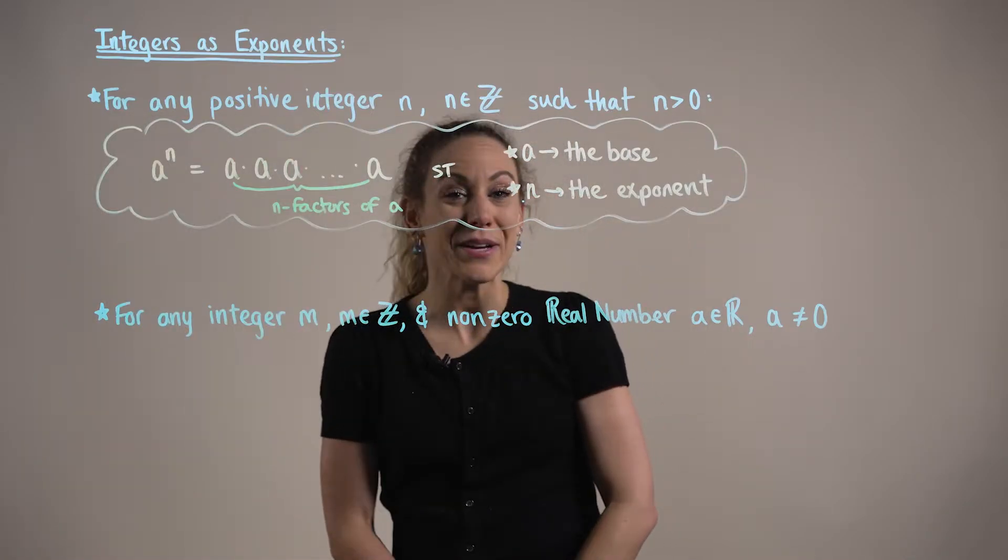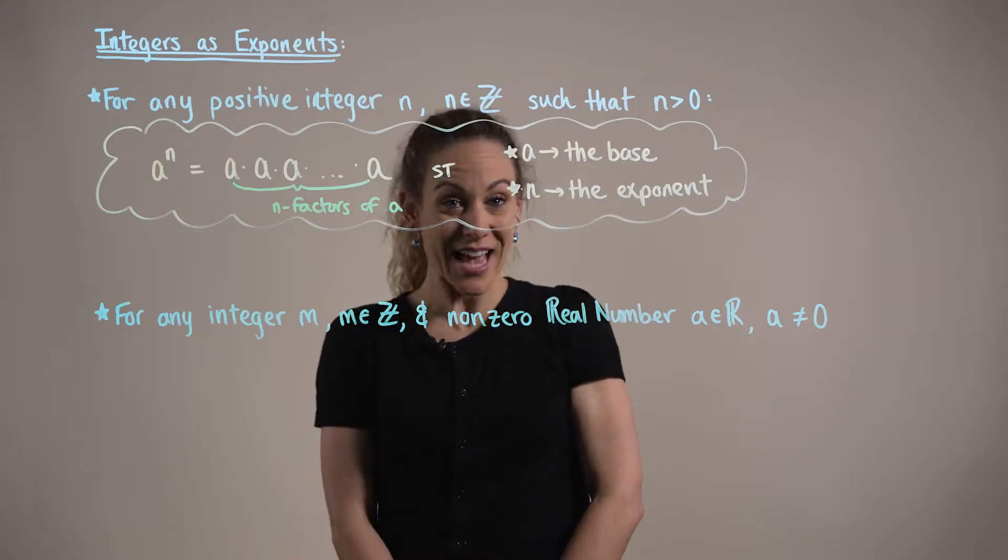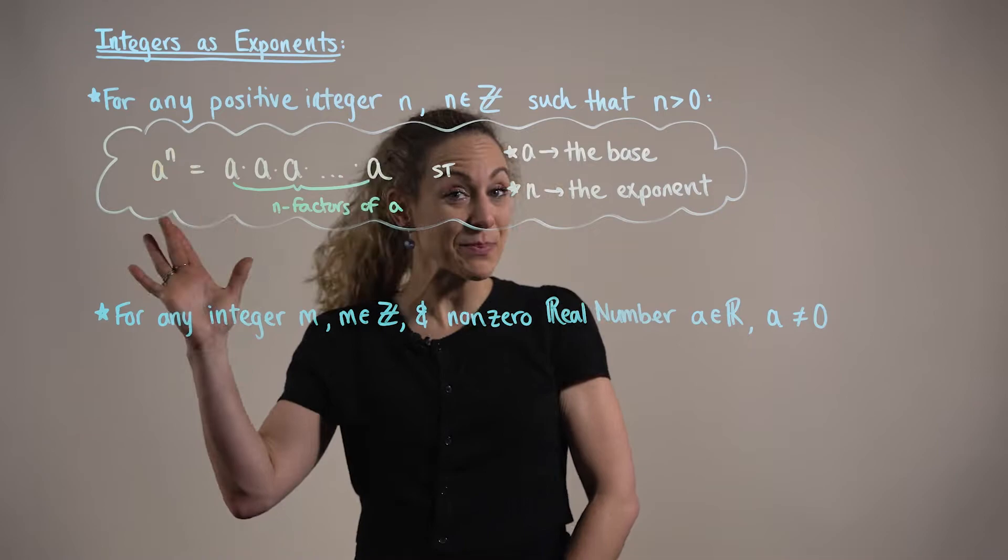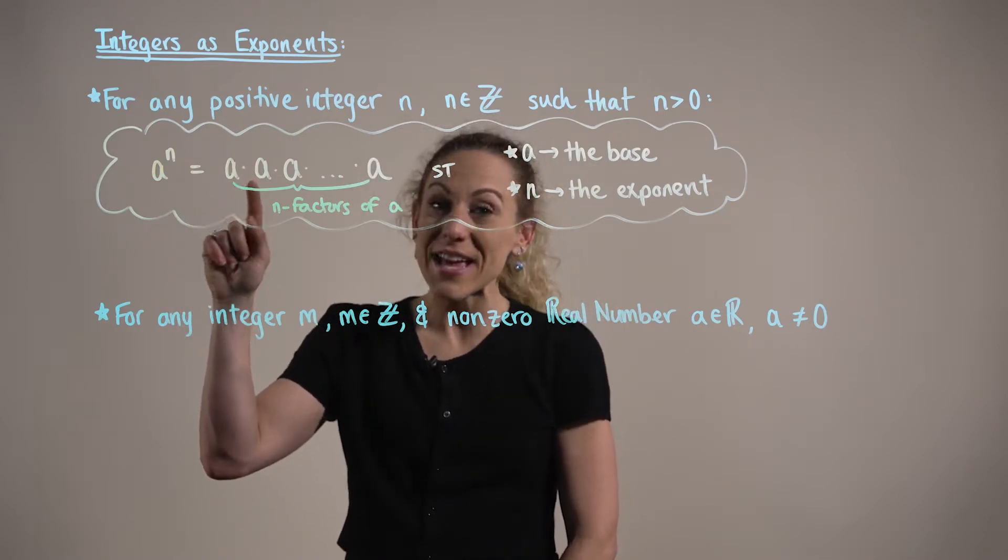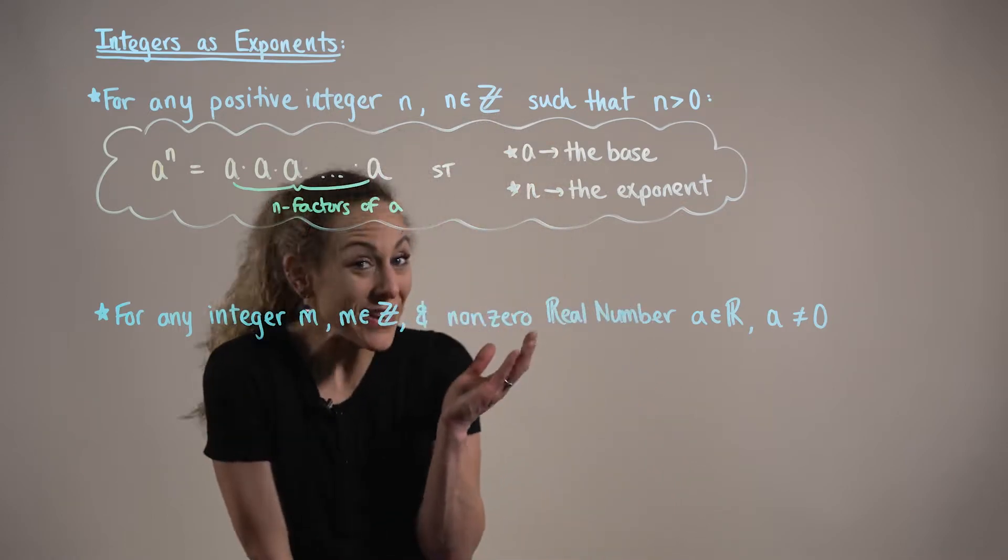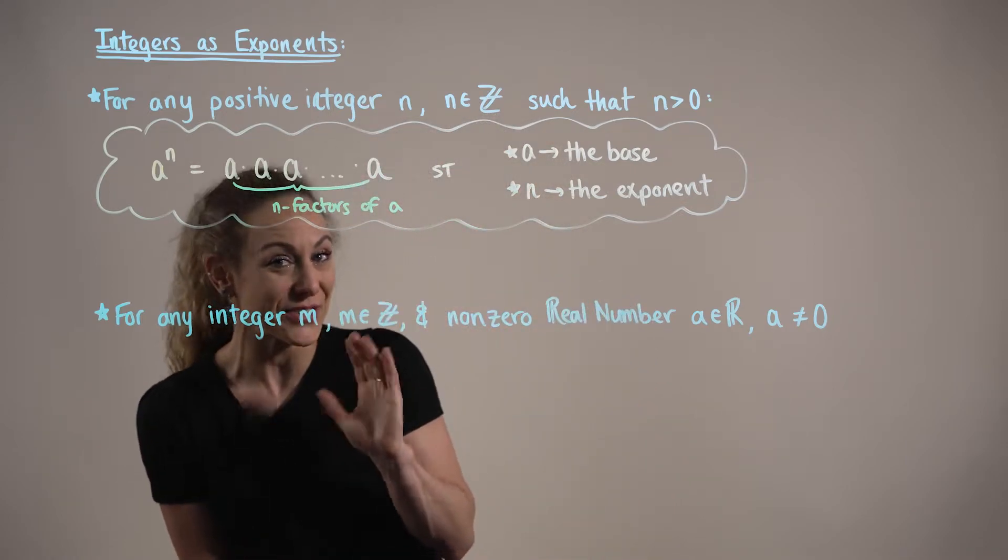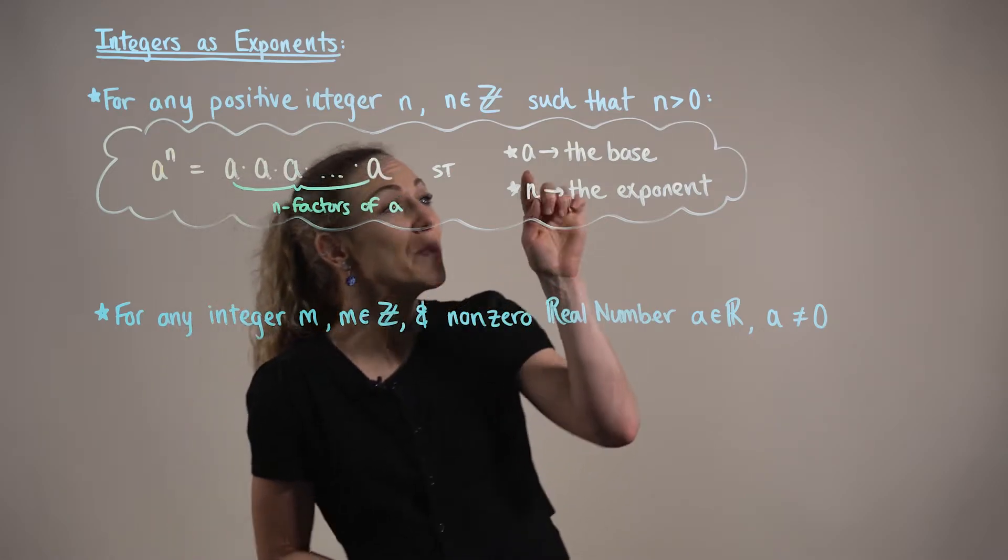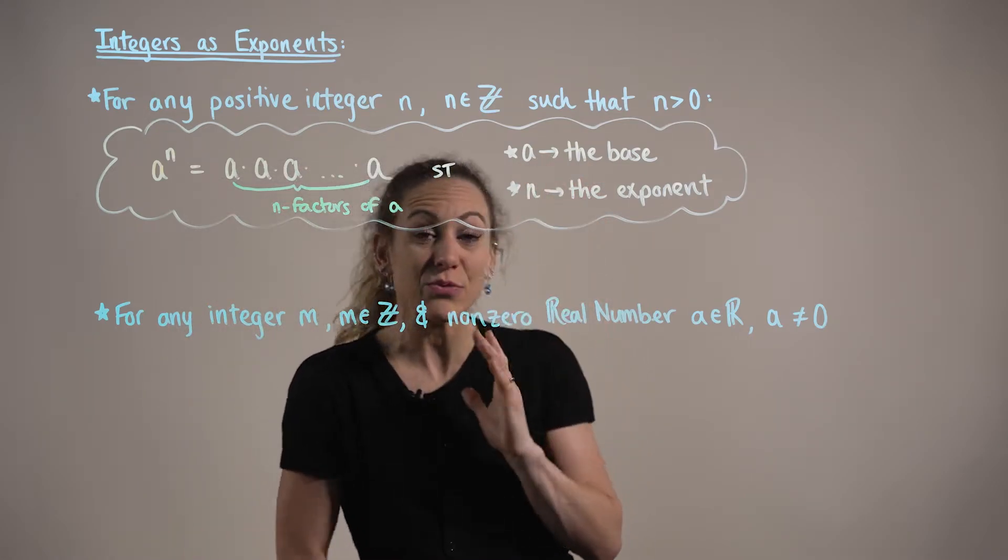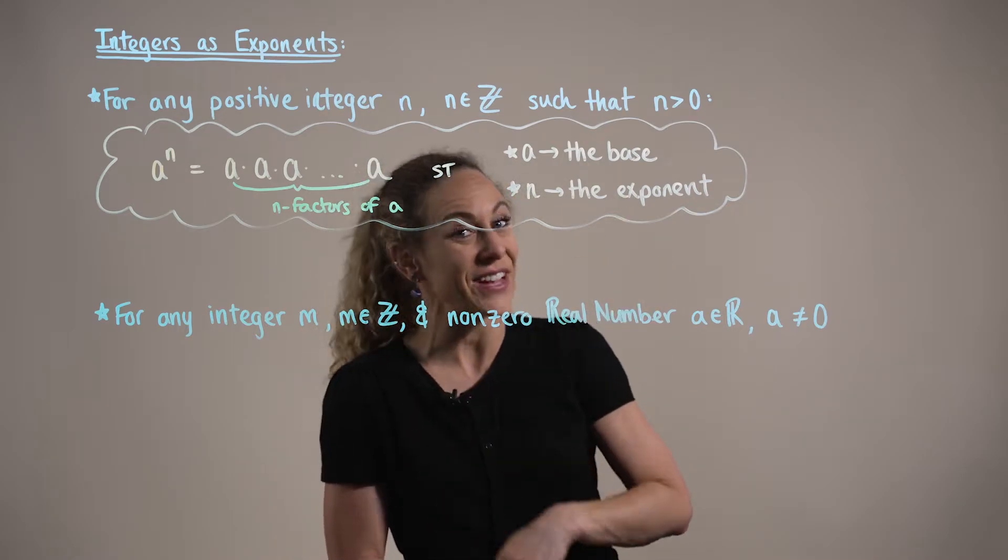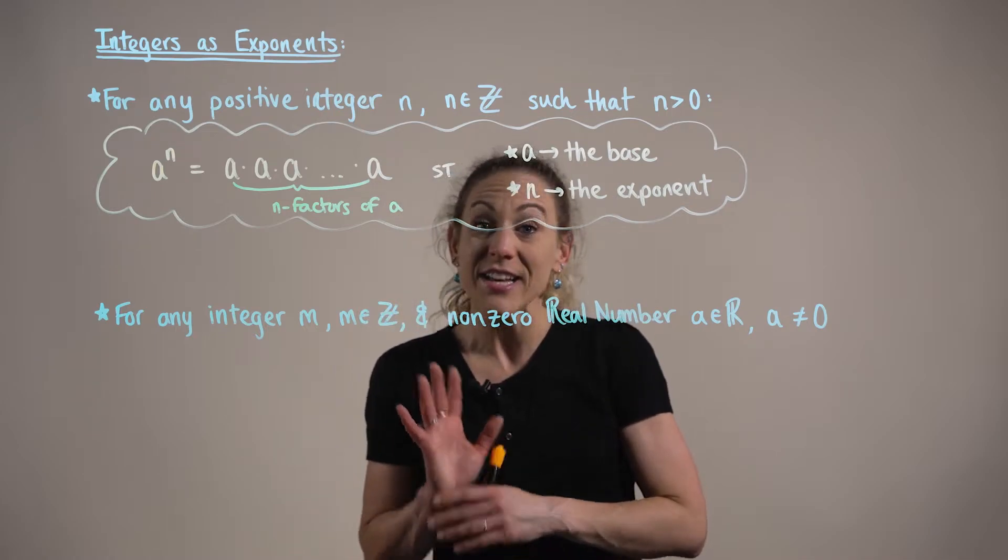When working with positive integers as exponents, a to the n can be expanded to a times a times a, all the way up to the nth a term. In other words, we have n factors of a being multiplied together. The number a is referred to as the base, and the integer n is referred to as the exponent.